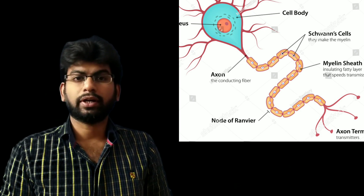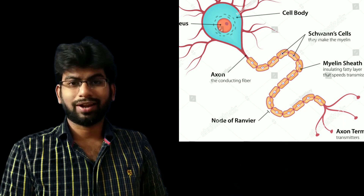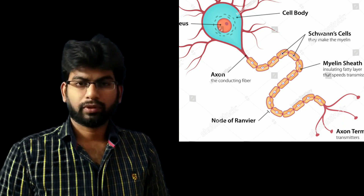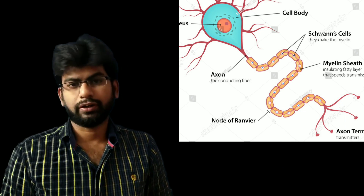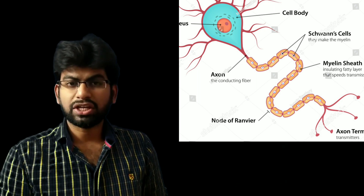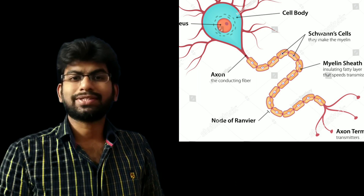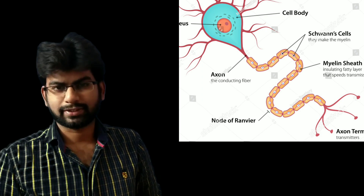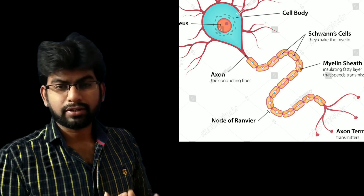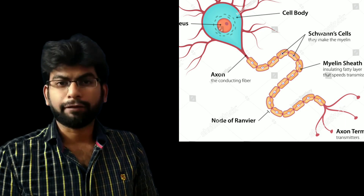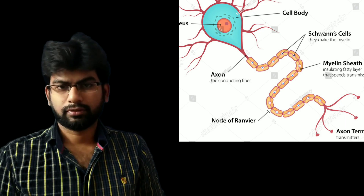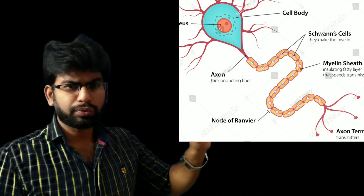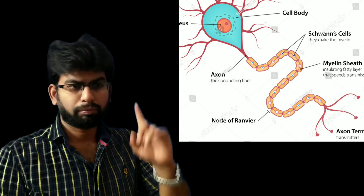Around the axon there is an insulator layer — a protection layer — we call that the myelin sheath. This myelin sheath is made up of Schwann cells.